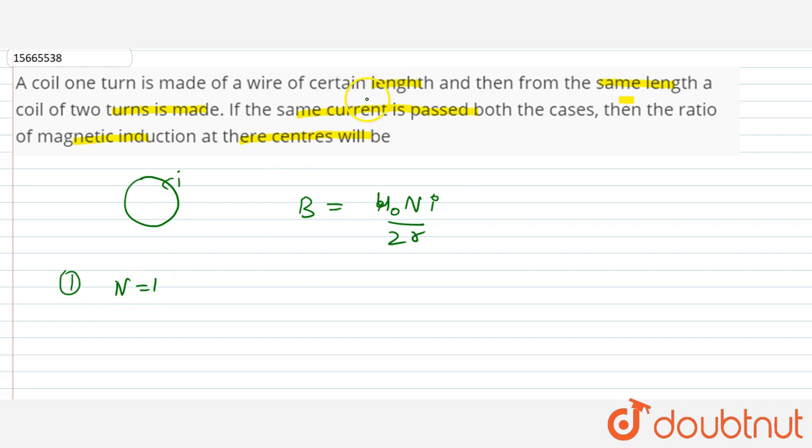It is made from a wire of certain length. The circle of circumference is L. This is the wire and this is the length of circumference, which is L, which is 2πr. Basically, the radius is L upon 2π.